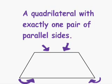And a trapezoid is a quadrilateral with exactly one pair of parallel sides.